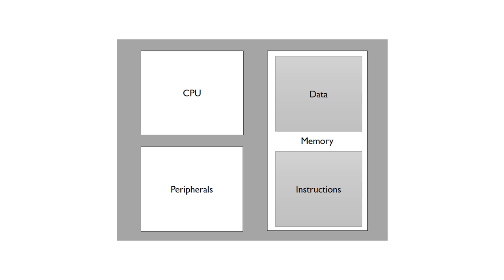For example, the data might just be numbers. The memory is split up into multiple sections, each one with a different address. So in address zero, we might have the number five, and address one, we might have the number six. An instruction at address zero might be to add those numbers together and store the result in location two. This instruction would cause us to do five plus six, and then the answer will be stored in address two.